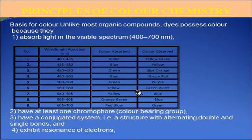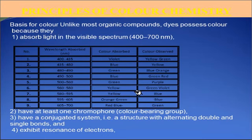Second principle: at least one chromophore. What is a chromophore? A chromophore is a color-bearing group and is responsible for color chemistry. Third principle: have a conjugated system. What is a conjugated system? A conjugated system is a structure with alternating double bonds and single bonds. Next: resonance of electrons — resonance of electrons is also responsible for color chemistry.